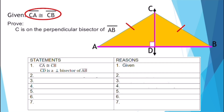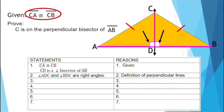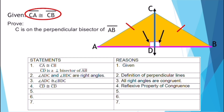For our second statement, angle ADC and angle BDC are right angles. The reason is the definition of perpendicular lines. For our third statement, angle ADC is congruent to angle BDC. The reason is all right angles are congruent. For our fourth statement, line segment CD is congruent to line segment CD, by the reflexive property of congruence. For our fifth statement, triangle ADC is congruent to triangle BDC, by the HL theorem, the hypotenuse and leg.